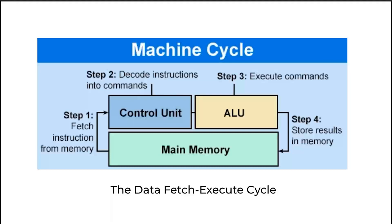When it fetches these instructions, usually in the form of zeros and ones — which is what we call machine language — it sends those zeros and ones to the processor, which has an arithmetic and logic unit for processing. The control unit handles the electronics of the CPU, and the ALU handles the arithmetic and logical calculations. When the calculations are done, the control unit carries all of those pieces of data and stores them back in the memory unit.